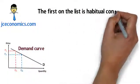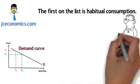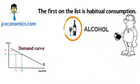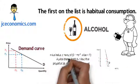The first on the list is habitual consumption. Consumers addicted to goods such as cigarettes or alcohol causes the demand to be price inelastic, where PED is less than one.